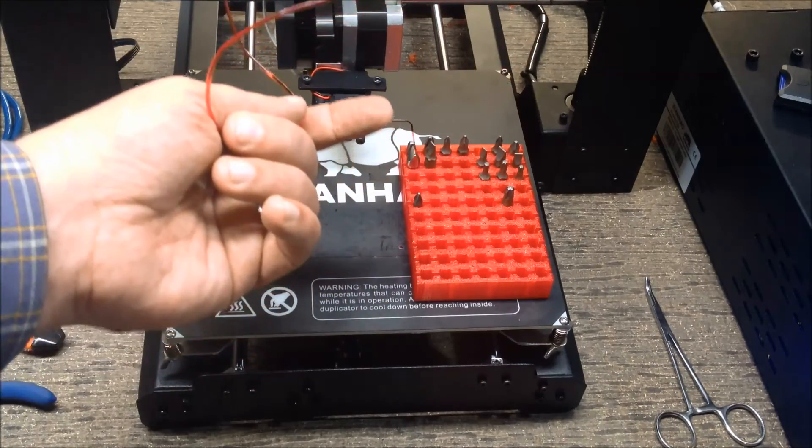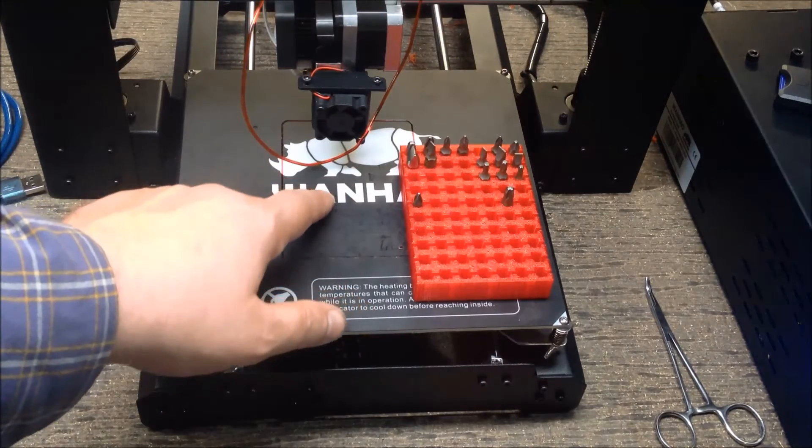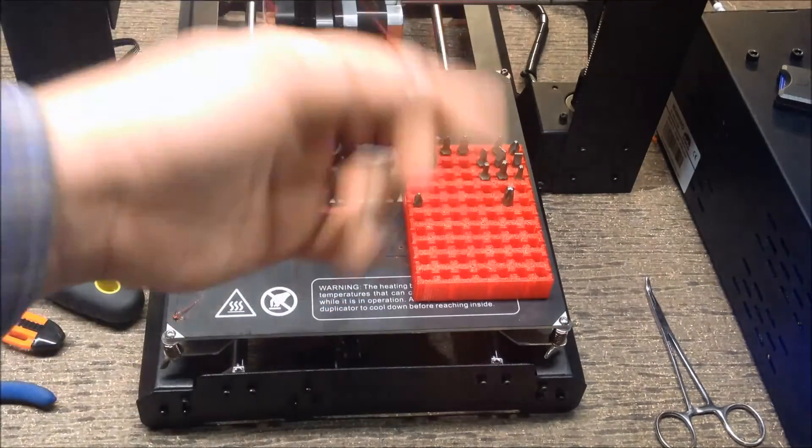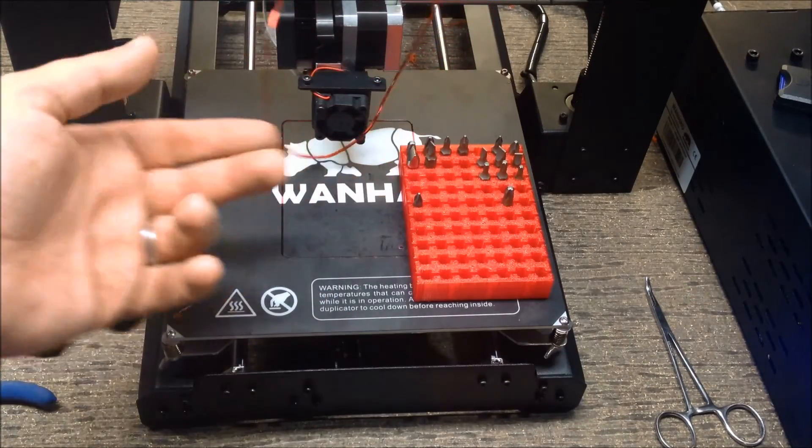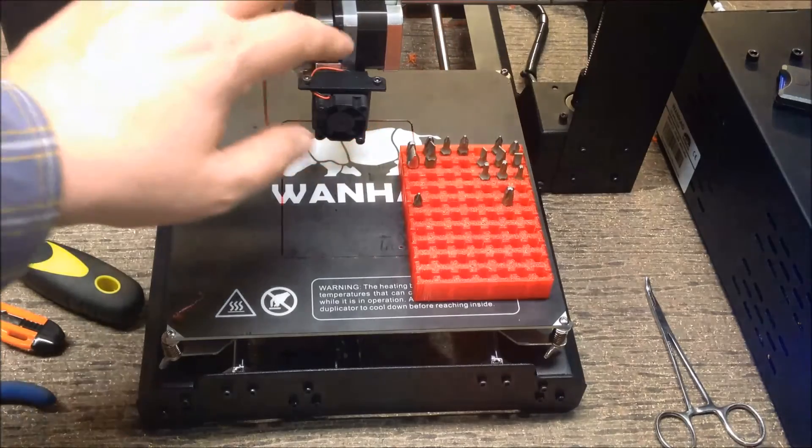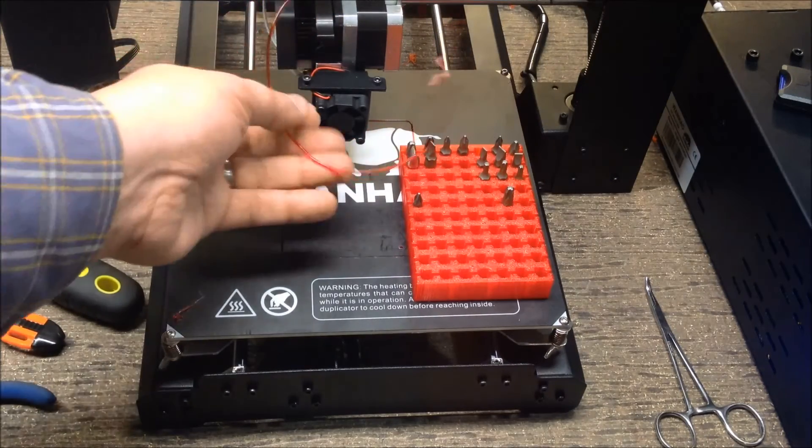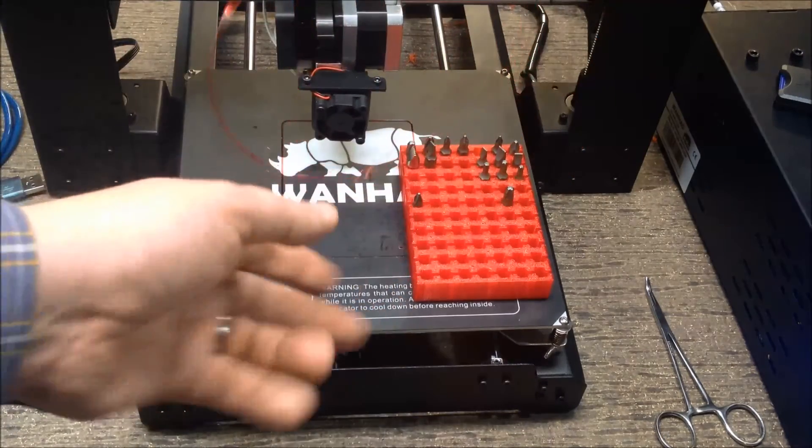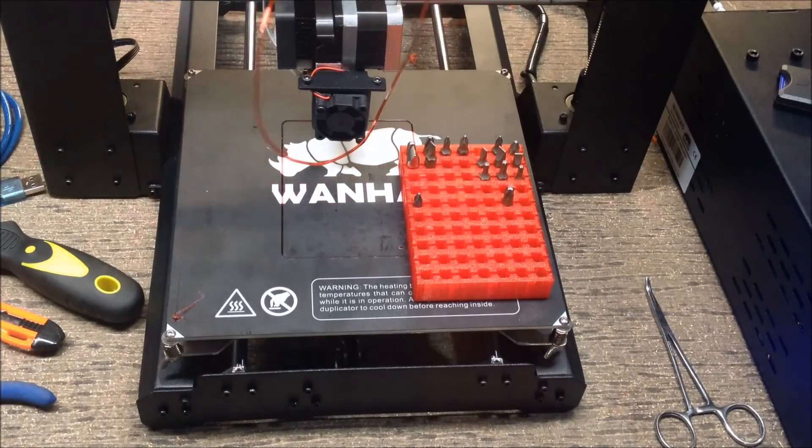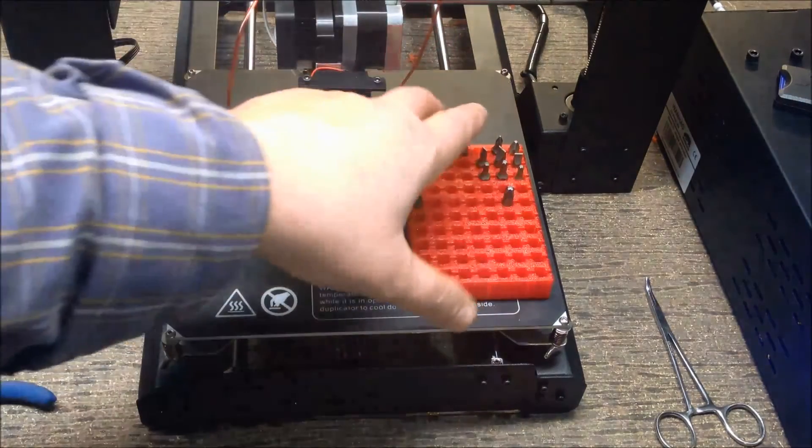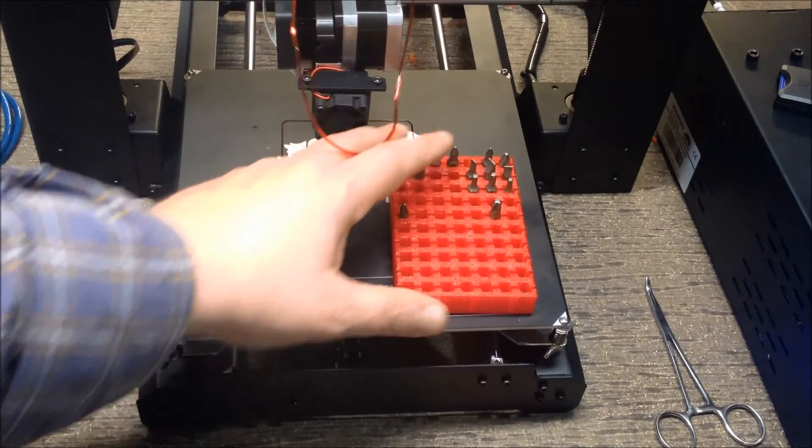Actually, what I'm thinking about doing, is buying another one of these Wanhao i3s, and just dedicating it to TPU. Just having a spool of TPU loaded up in it all the time. Because it is, like I say, a pain in the butt to get this threaded into here, because this is so flexible. And then, like I've said in the other videos, one of the other things, it seems to stick on the roll a little bit. It'll eventually pull out, but it's really, it likes to stick to itself, which is really cool, from the aspect of very high quality printout of parts.